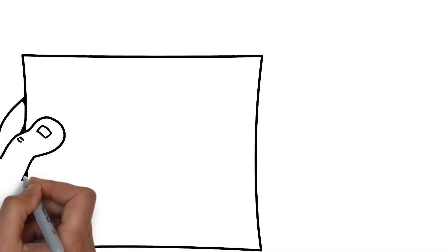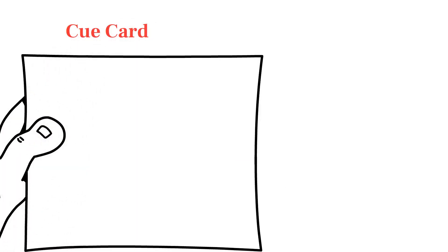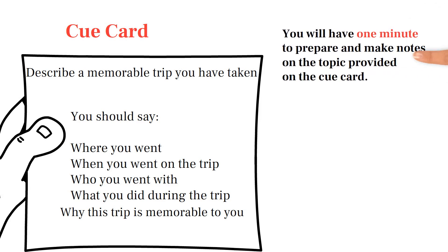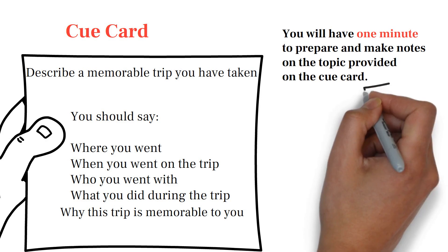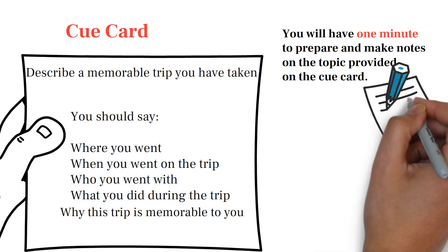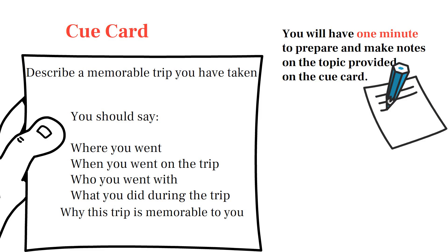In Part 2 of the IELTS Speaking exam, you will be given a task card, also known as a cue card. This card contains a topic and a set of prompts or questions related to that topic. You will have one minute to prepare and make notes on the topic provided on the cue card. During this time, you should brainstorm ideas, outline your response, and jot down key points.